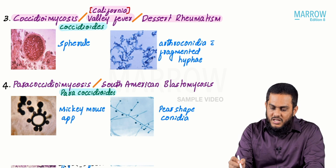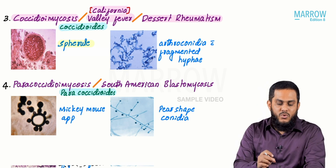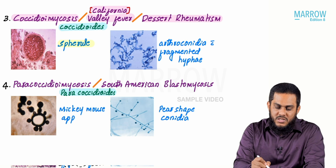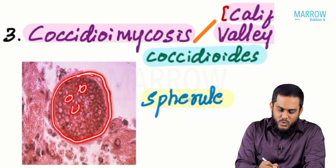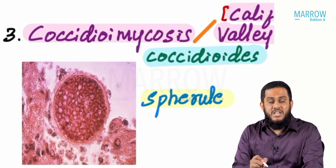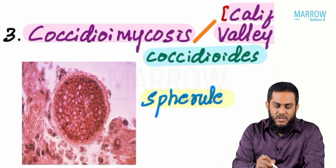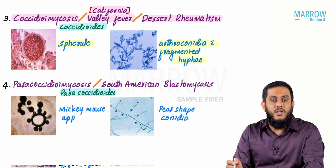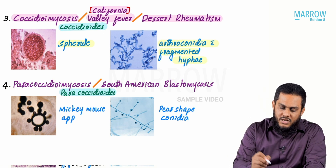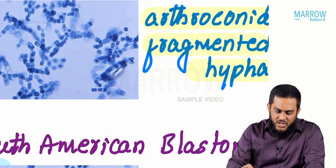In the yeast form of Coccidioides, what you see is a spherule — a yeast cell containing endospores inside. This yeast cell with endospores inside is called a spherule. Spherule = yeast form of Coccidioides.